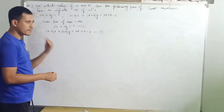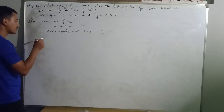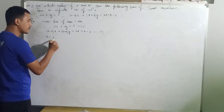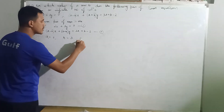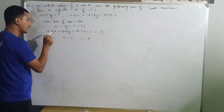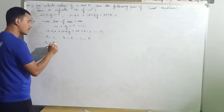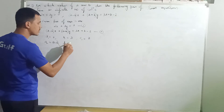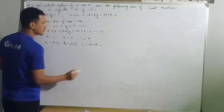Now, let's write down the coefficient of x, coefficient of y, and the constant term from the first as well as the second equation. A1, the coefficient of x in the first equation, is 2. B1, the coefficient of y from the first equation, is 3. C1, the constant term from the first equation, is 7. Similarly, A2, the coefficient of x in the second equation, is A minus B. B2, the coefficient of y in the second equation, is A plus B. C2, the constant term, is 3A plus B minus 2 from the second equation.